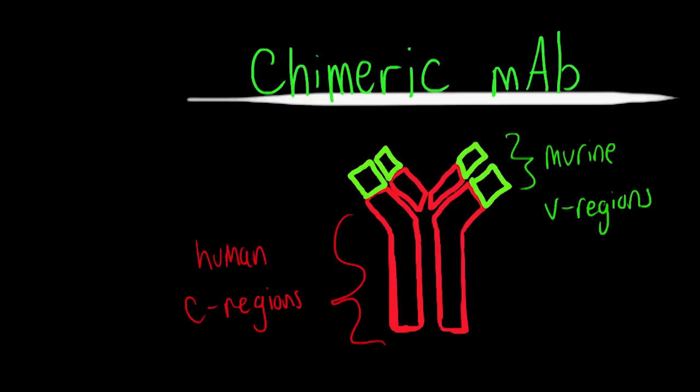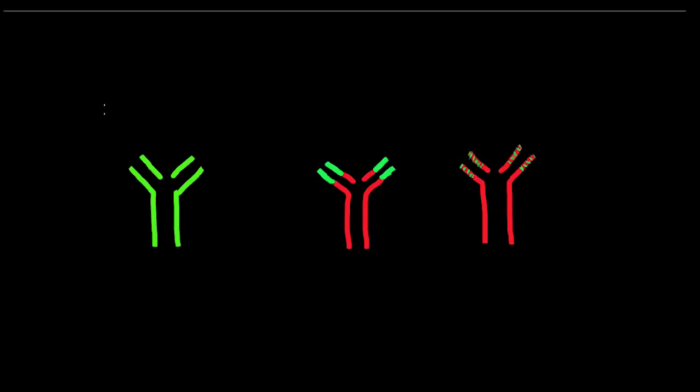There's another kind of MAB called humanized monoclonal antibody, and we'll talk more about these and the differences between these three: murine, chimeric, and humanized, in future videos.